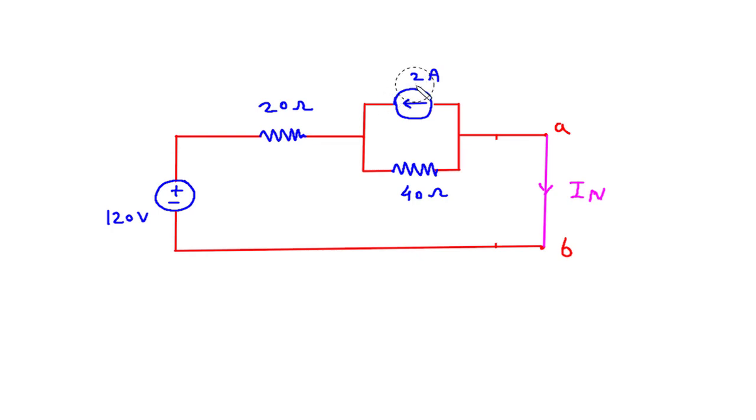Now we will convert this 2 Amp current into its equivalent voltage source. This will be positive and this will be negative. V is equal to I into R, where I is 2 Amp and R is 40 Ohm. So 40 into 2 is 80 Volt.